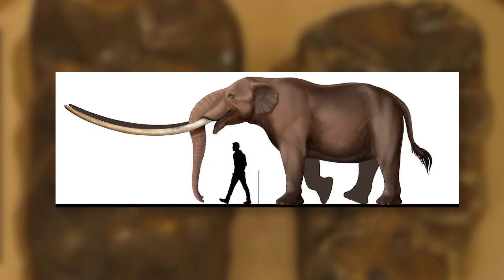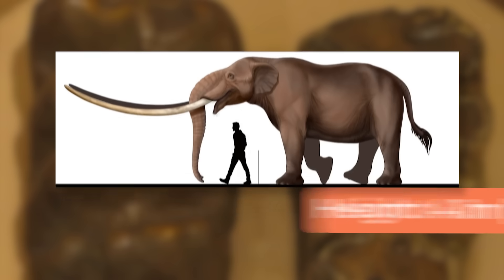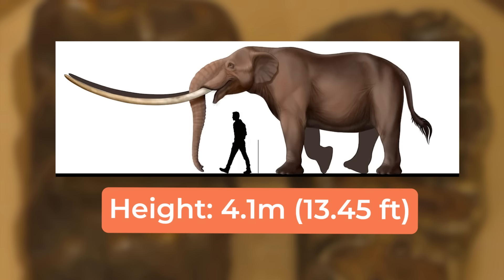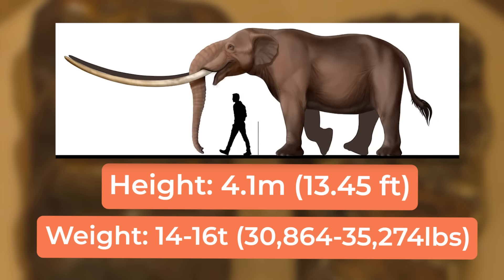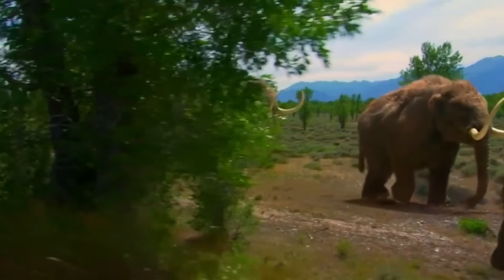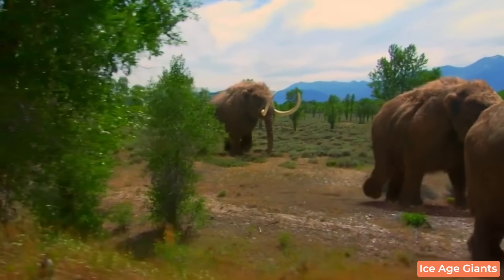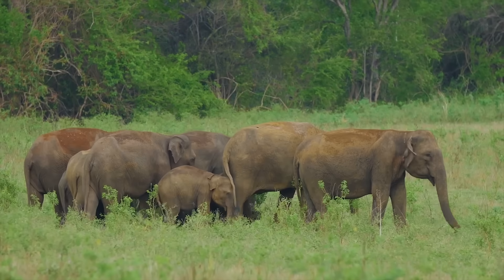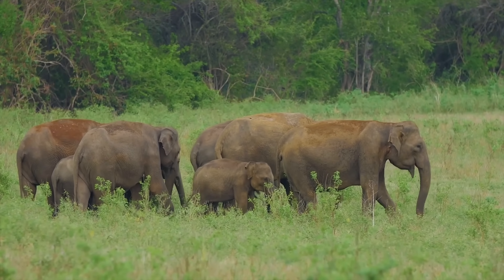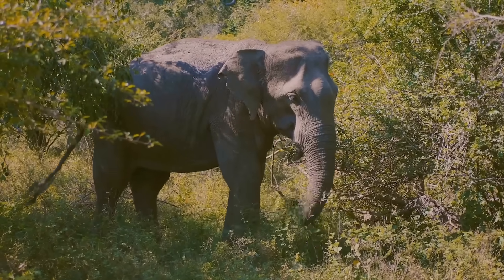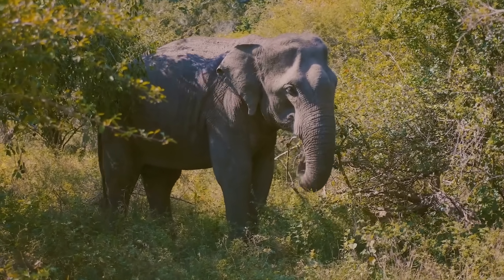Zygolophodon was a large animal, comparable in size to the American Mastodon. Some estimates have it even bigger, standing up to 4.1 meters or over 13 feet at the shoulder, and weighing about 14 to 16 tons — roughly 30,864 to 35,274 pounds. At this size, it would be a good deal heavier than not only all other mammutids, but almost all other land mammals in general. But size wasn't the only interesting aspect to this Mastodon.